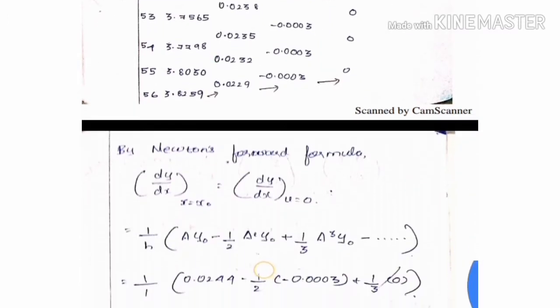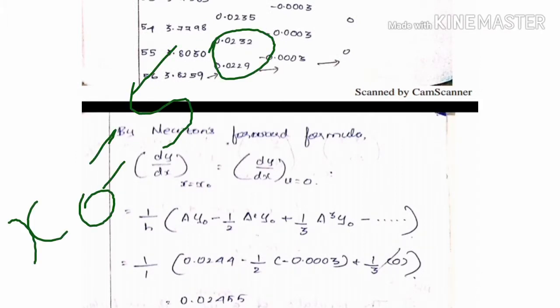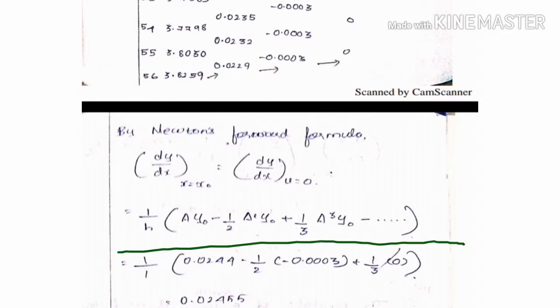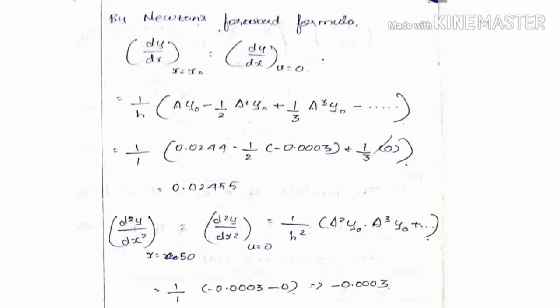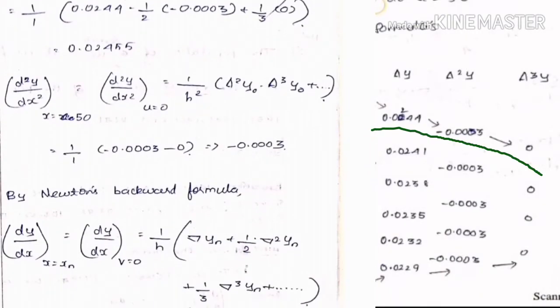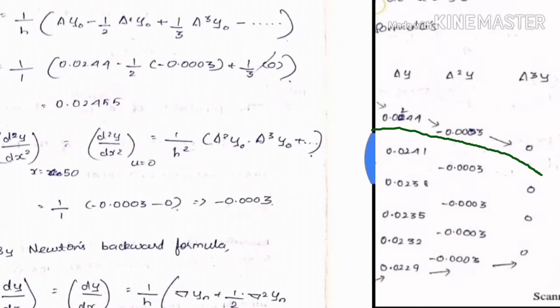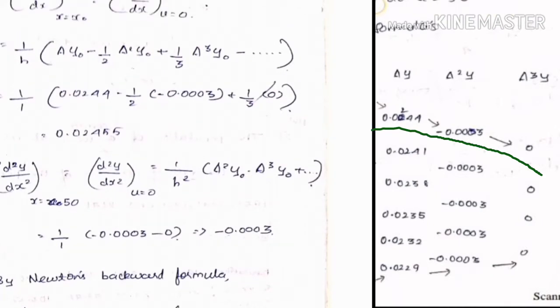Applying Newton's forward formula for the first derivative: dy/dx at x equals x-naught is equal to 1/h times [delta y-naught minus (1/2) delta squared y-naught plus (1/3) delta cubed y-naught minus ...]. Here h equals 1 (interval between values). Substituting delta y-naught equals 0.0544, delta squared y-naught, and delta cubed y-naught, the first derivative answer is approximately 0.02455.